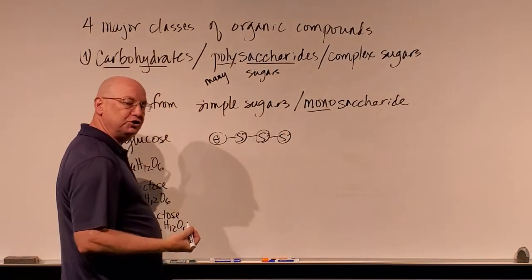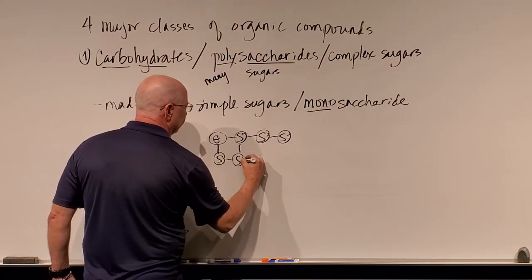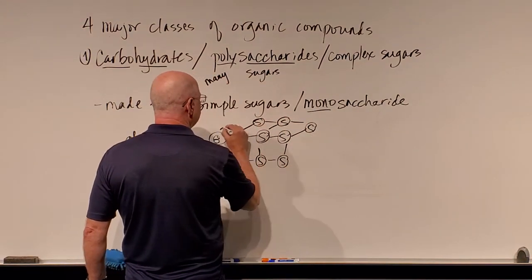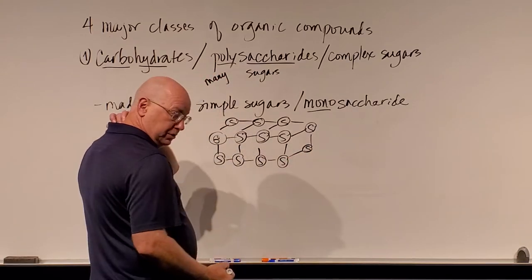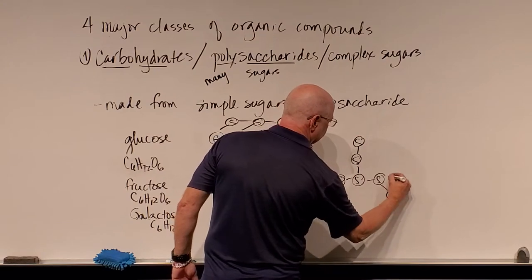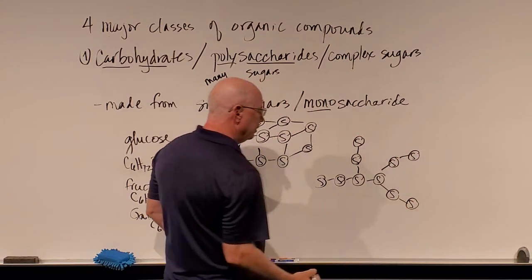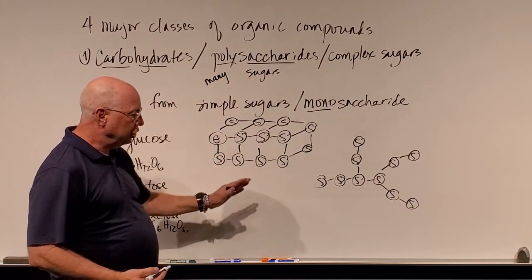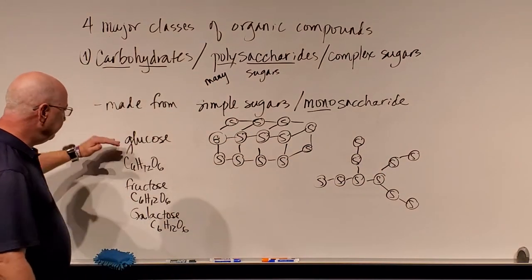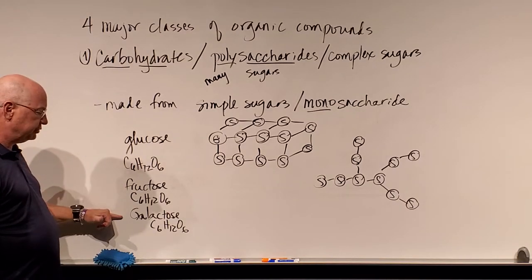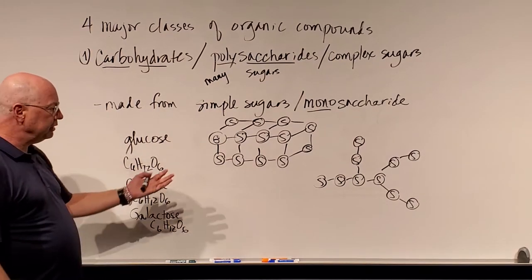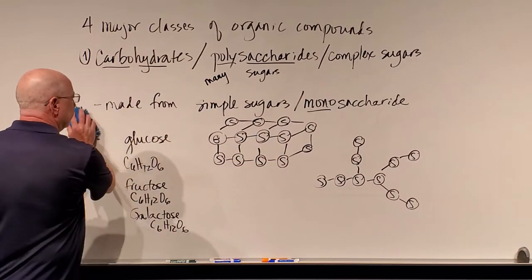These simple sugars can be put together with chemical bonds and get bound into large chunks, long chains, or three-dimensional blocks. When a whole bunch of sugar molecules are bound together — sometimes in long branching chains — those are carbohydrates: many sugars stuck together in covalent chemical bonds. These are complex sugars, polysaccharides. Each one can be made out of monosaccharides — glucose, fructose, galactose, and a few others that are the major players in biology.